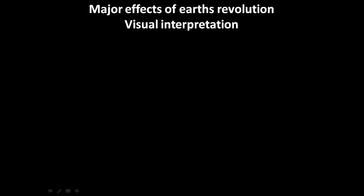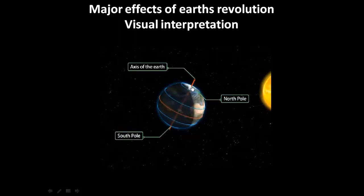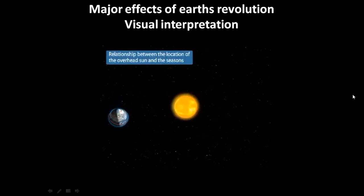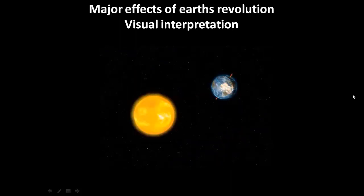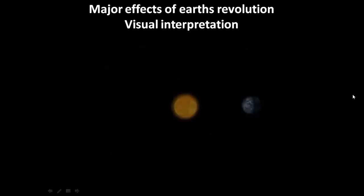Now we will see some major effects of earth's revolution and visual interpretation — this is extended learning. As you can see, the earth is rotating on its own axis, with the axis tilted 23.5 degrees, showing the north pole, south pole, and the illuminated part. We will learn the relationship between the location of the overhead sun and the seasons. While the earth is revolving toward the sun, the direct rays of the sun fall on earth at 90 degrees, which is called the overhead sun. While it is revolving and rotating, the circle of illumination will remain constant.